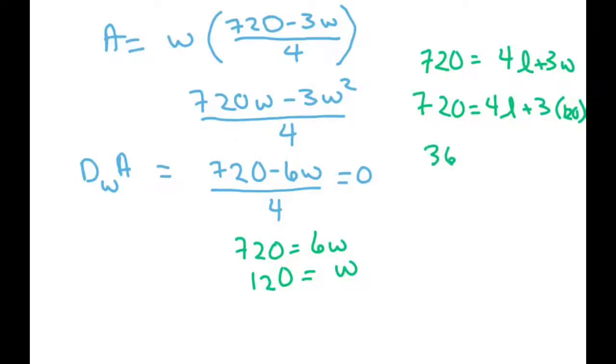So you get 360 equals 4L. So L equals 90.